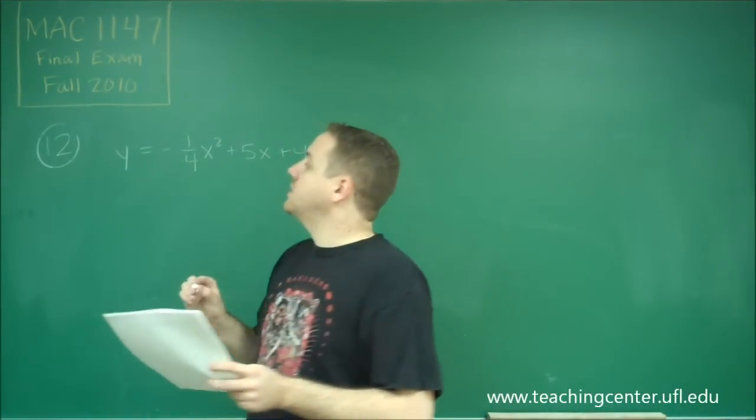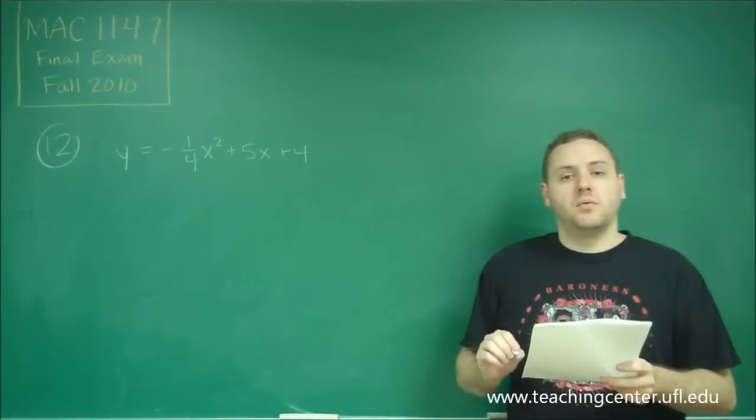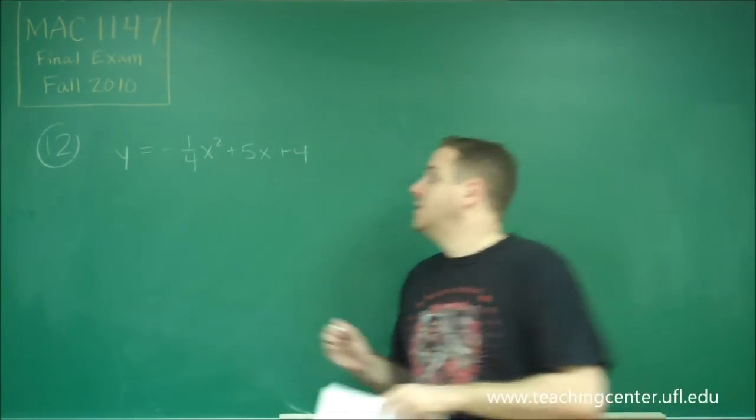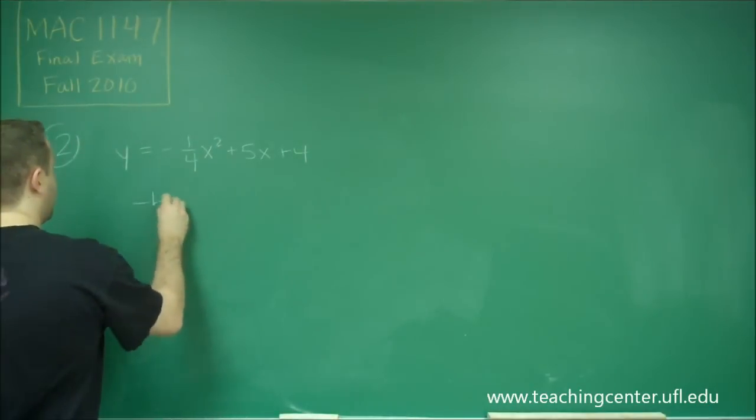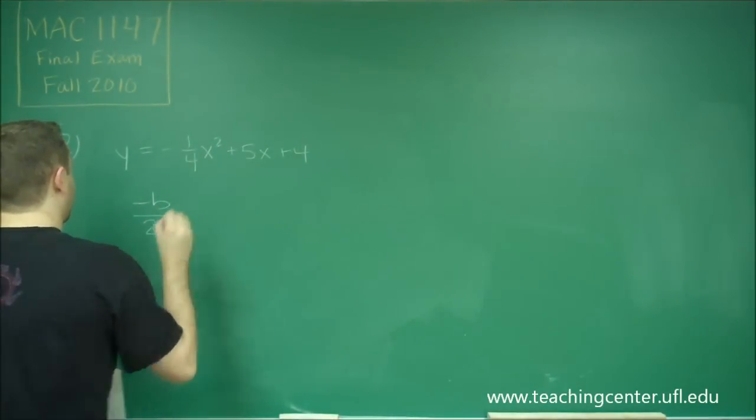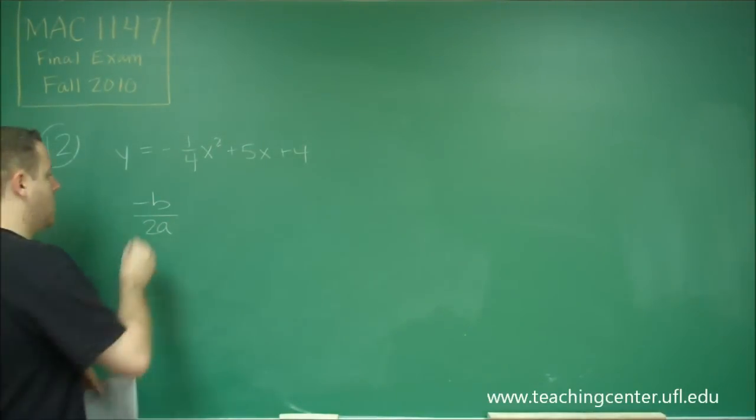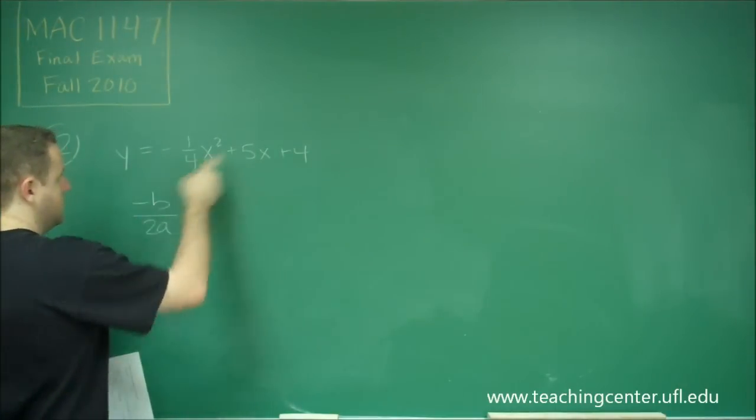The first thing we're going to do is use the vertex formula, but remember that tells you where the maximum occurs, not what the value is. So, we need to use negative b over 2a to find the vertex, where the vertex of this parabola is. If we use our numbers here,